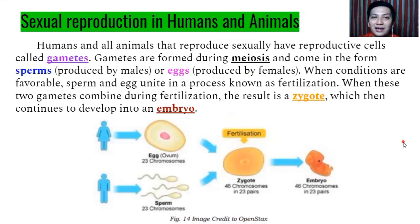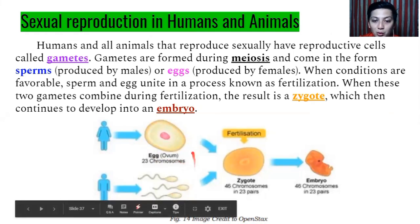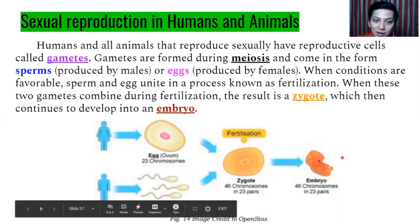In sexual reproduction in humans and animals, reproductive cells called gametes are formed during meiosis — the sex cell division — in the form of sperm produced by males and eggs produced by females. When conditions are favorable, sperm and egg unite in fertilization — internal fertilization. When the two gametes combine, the result is a zygote, which develops into an embryo. The egg or ovum has 23 chromosomes, the sperm also has 23 chromosomes; when they meet in the fallopian tube, the zygote is formed with 46 chromosomes and divides repeatedly to develop into an embryo.